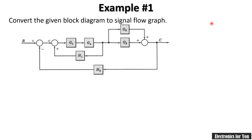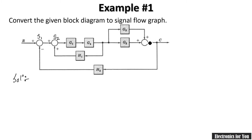Let's move to example one — we have to convert a given block diagram into a signal flow graph. We need to indicate each summing point and takeoff point as a node. Let us name the summing points: the first one is S1, the second is S2, and the third is S3.